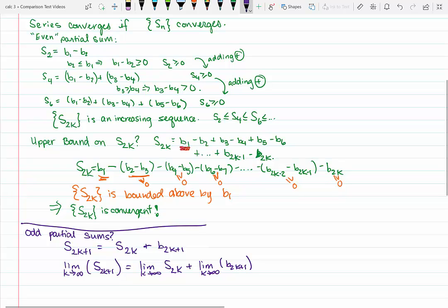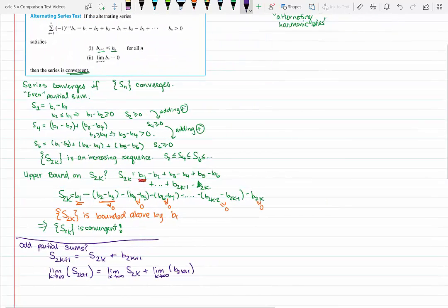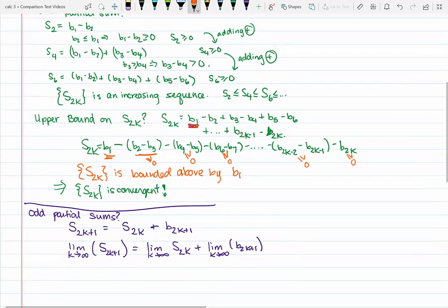But if we go back and look at the assumptions we made in the alternating series test, we made the assumption that the B sub n's approach 0. Well, if the B sub n's approach 0, certainly the odd terms from within the B sub n sequence must also approach 0.